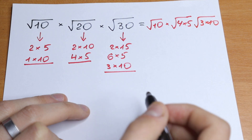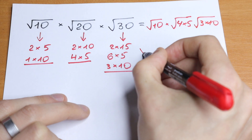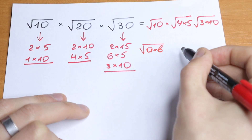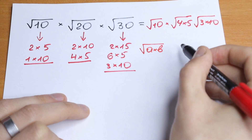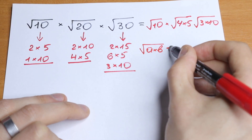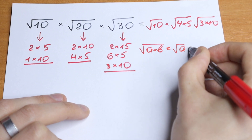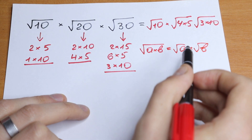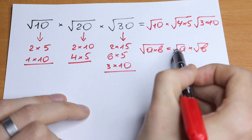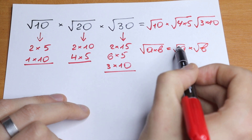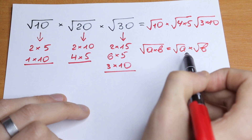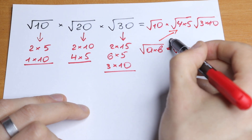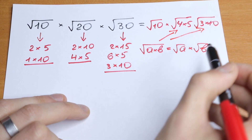Now we need to know the rule. If we have the square root of a times b — a product inside our square root — we can write this as square root of a times square root of b. So we can split it and use the square root sign on every factor.